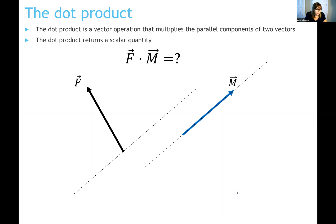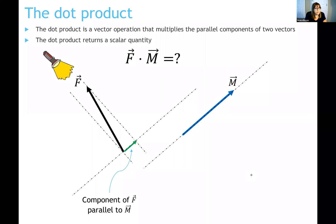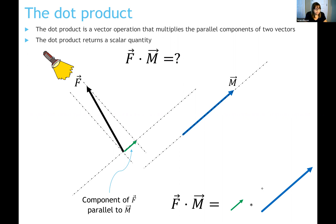To find the component of vector F parallel to vector M, imagine shining a flashlight on vector F toward that parallel direction. In the real world you would see a shadow emerge — the shadow on that parallel line is the component of vector F that lies in the parallel direction of vector M. The dot product between F and M multiplies only the magnitude of that shadow piece of F, not the full length of F, times the magnitude of vector M.